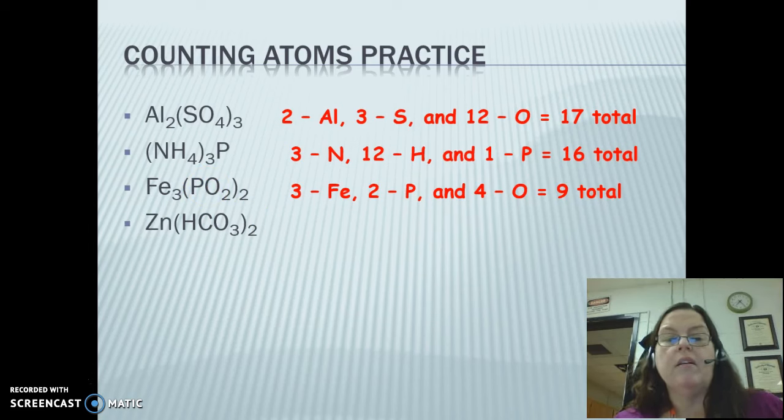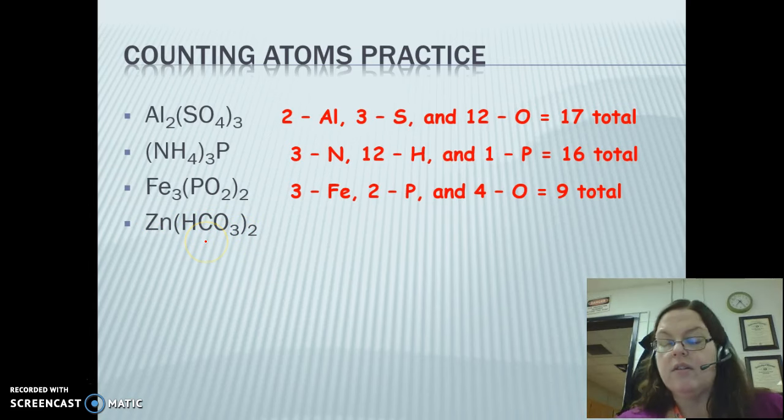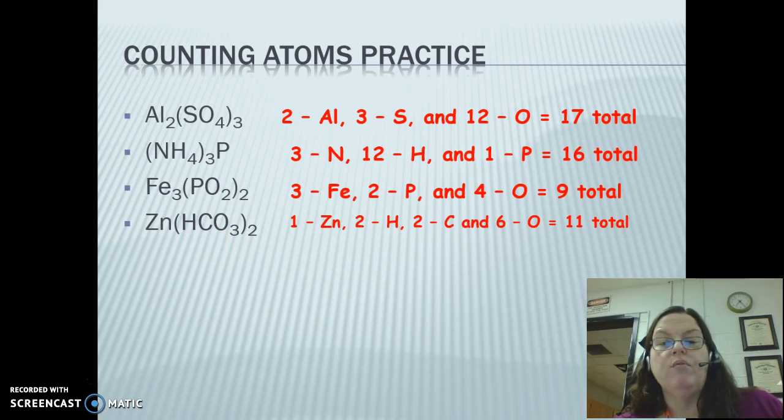Here we go, zinc hydrogen carbonate. We have one zinc, we have two times one hydrogens, two times one carbons, and two times three oxygens. So we have one, two, two, and six for a total of 11.